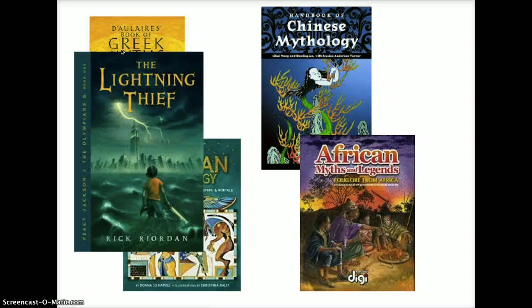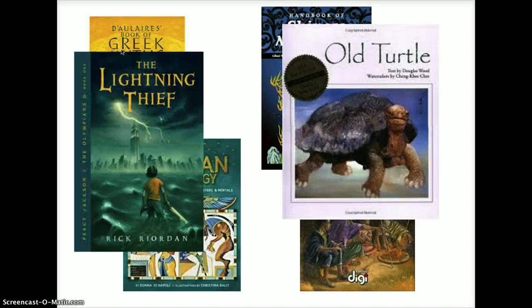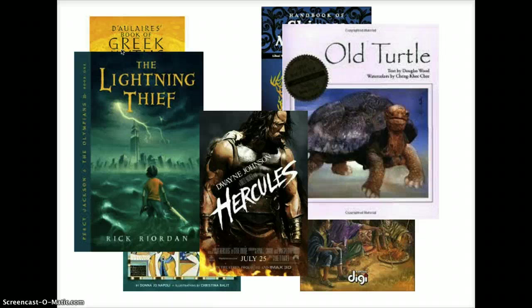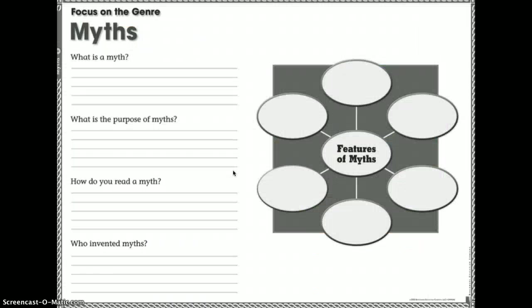Riordan combined Greek mythology in Percy Jackson, and in the Heroes of Olympus series he combined both Roman and Greek mythology. We also have the book Old Turtle, which I believe is a Native American story about how the earth was formed. Mythology also appears in movies — The Rock's Hercules — and you see myths in the Avengers with Thor.